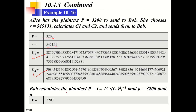The receiver (Bob) calculates the plaintext at the decryption end, recovering the original message that Alice sent. This covers RSA and the ElGamal cryptosystem — two algorithms under asymmetric cryptography.